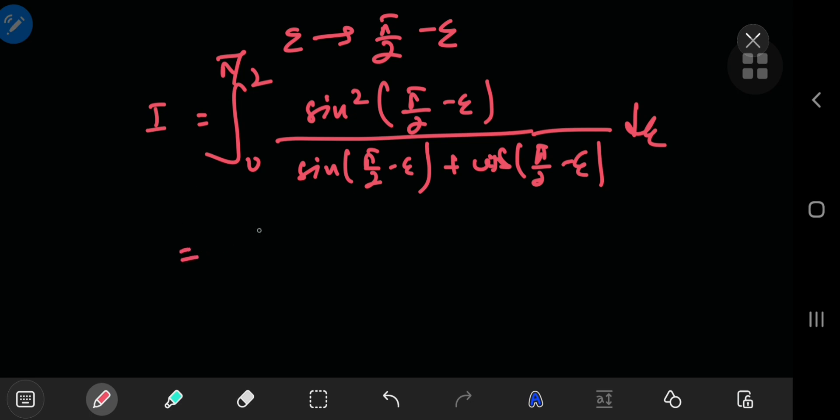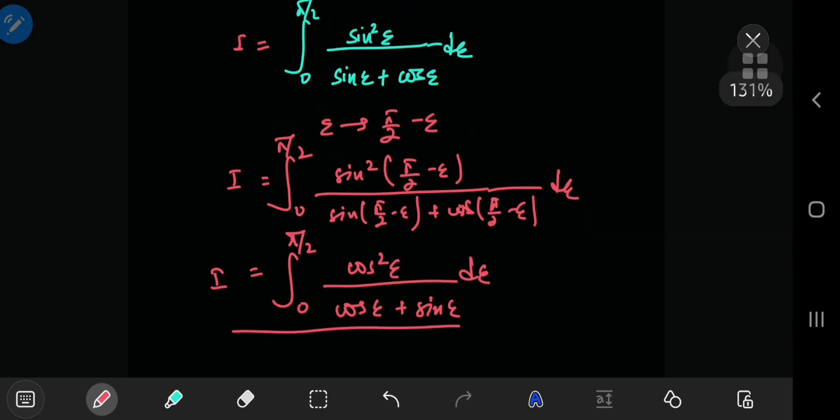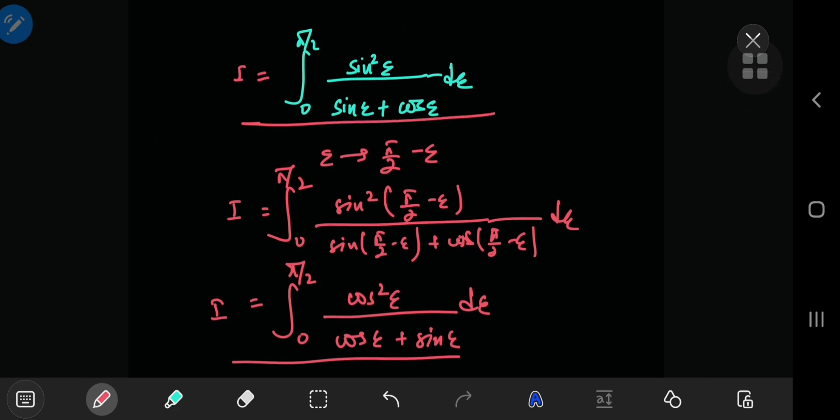Now you have the integral from zero to pi by 2 of the square of the cosine of epsilon divided by the cosine of epsilon plus the sine of epsilon—that is your integral I. This integral in red is your integral I, and so is this integral in this really bright aqua-ish color, whatever it is. These are both the same integral.